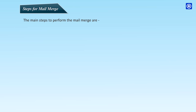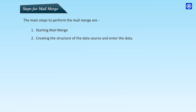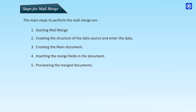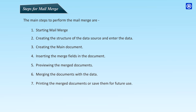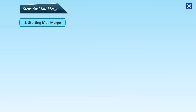The main steps to perform the mail merge are: starting mail merge, creating the structure of the data source and entering the data, creating the main document, inserting the merge fields in the document, previewing the merged documents, merging the documents with the data, and printing the merged documents or saving them for future use.